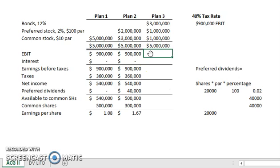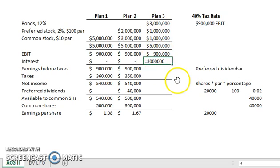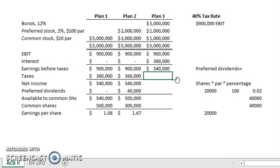Last but not least, Plan 3. We grab the same Earnings Before Interest and Taxes of $900,000. In this case, we finally get to calculate some interest because we have bonds. Our interest formula is principal times rate times time. The principal is $3 million in bonds, the rate is 12%, and the time is 1 year — giving us $360,000 in interest. Earnings Before Taxes is $900,000 minus $360,000, which equals $540,000. We then multiply $540,000 by the 40% tax rate to get our taxes, and deduct that to find our net income.